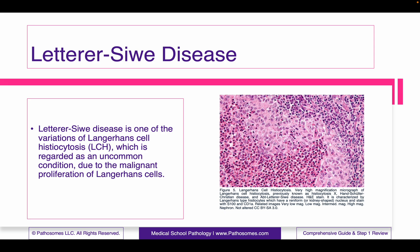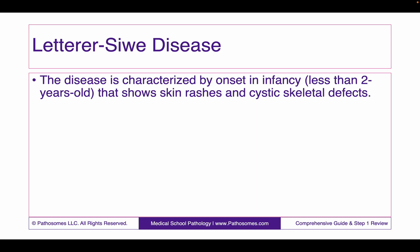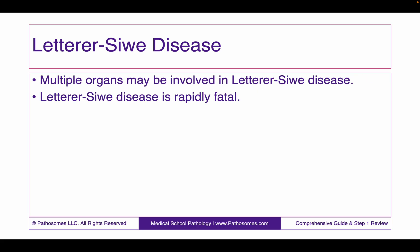Letterer-Siwe disease is one of the variations of Langerhans cell histiocytosis, which is regarded as uncommon due to the malignant proliferation of Langerhans cells. The disease is characterized by onset in infancy — that is, less than two years old — and shows skin rashes and cystic skeletal defects. Multiple organs may be involved in Letterer-Siwe disease, and it can be rapidly fatal.